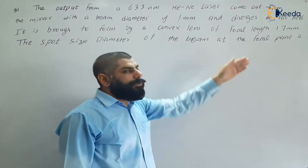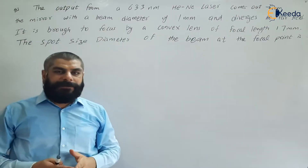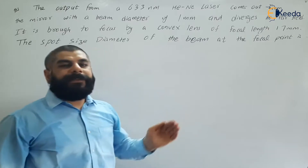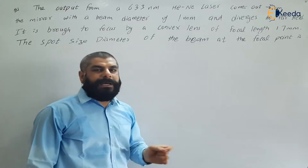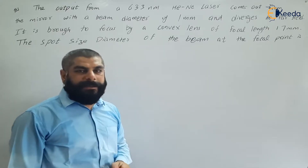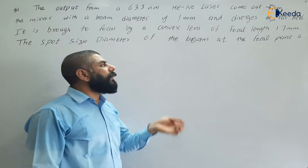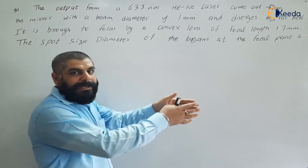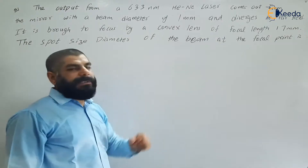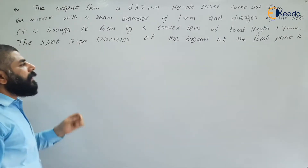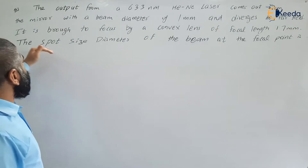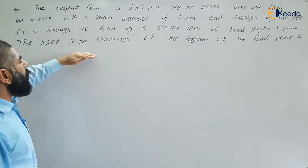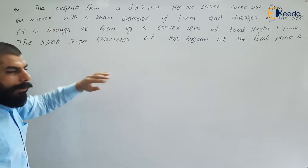A convex lens is nothing but a converging lens, so light which is being diverged will converge. If the light is coming from infinity, it will pass through the focal point of the convex lens. At the focal point when it converges, some spot will be formed, and we have to calculate that diameter.